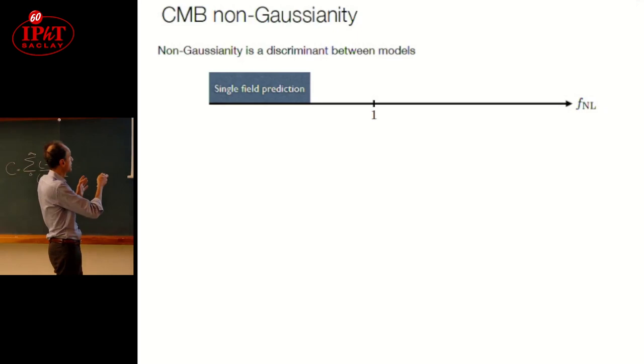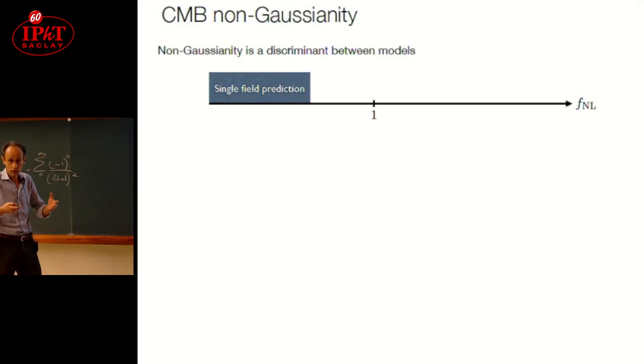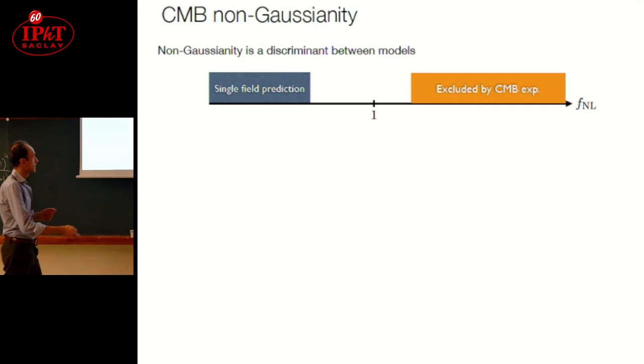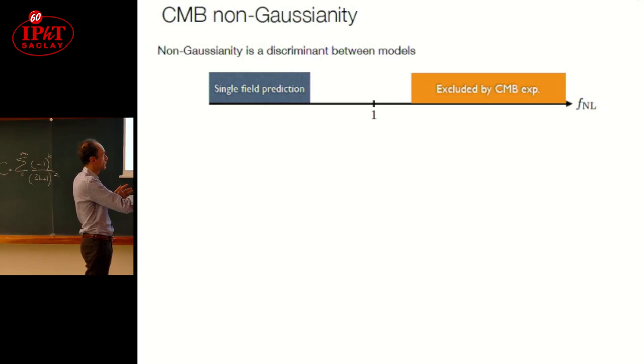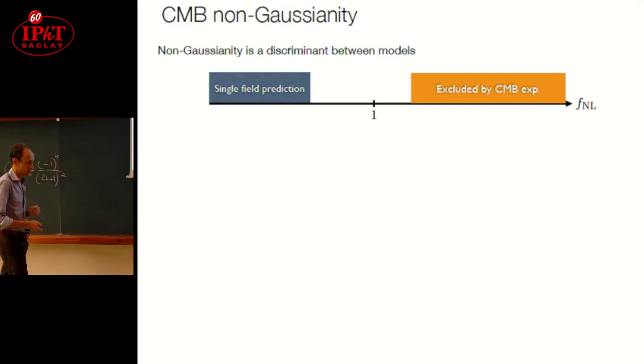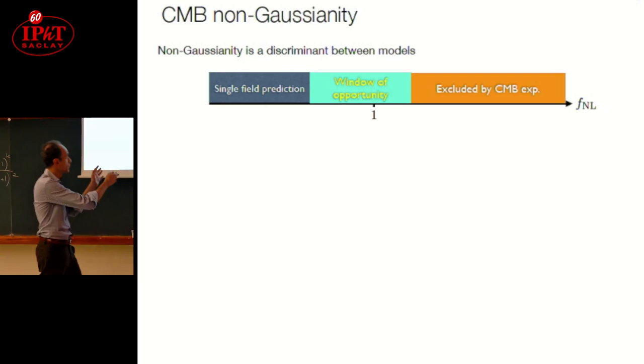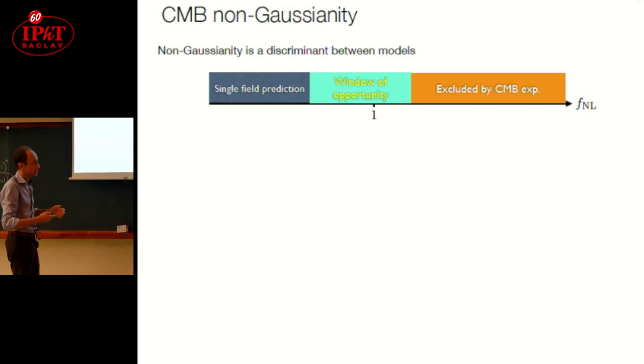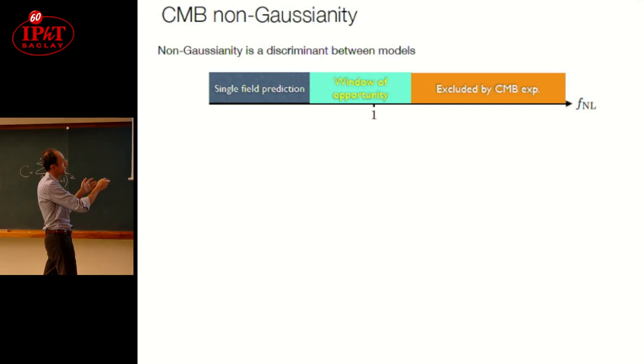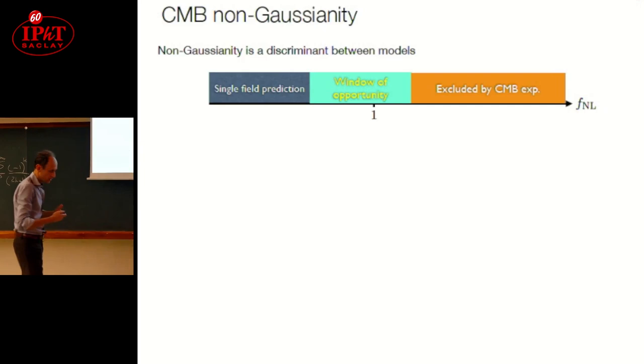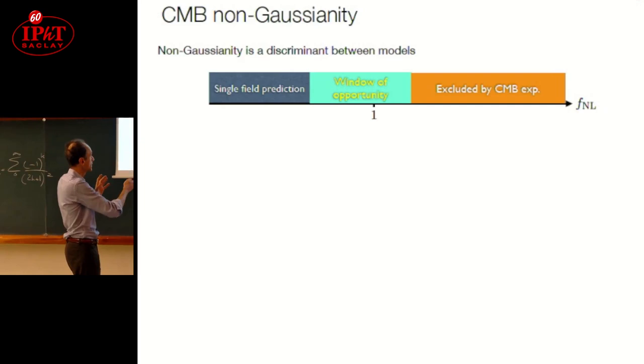The picture is the following: these are the single field predictions, there is some small fNL that you can compute and control. It's very difficult to detect because CMB at the time, and also today, excludes some part of the parameter space where fNL is largest, something like over 10. Then there is a window of opportunity. At the time we wanted to push this exclusion as much as possible to unity, but clearly the discriminant between different models, single fields and multi-fields, lies really here. There are other models of inflation that are discriminated by looking at this window, but this window is very important.